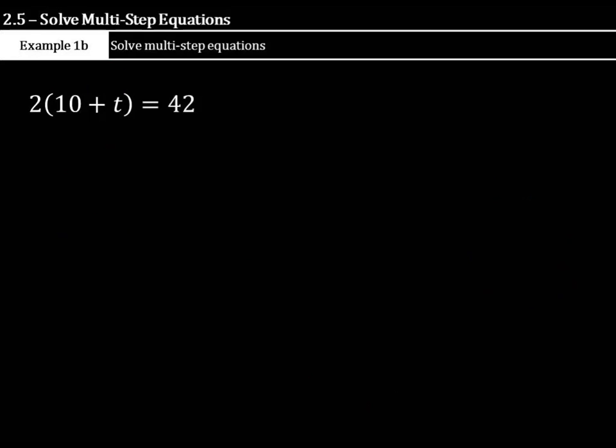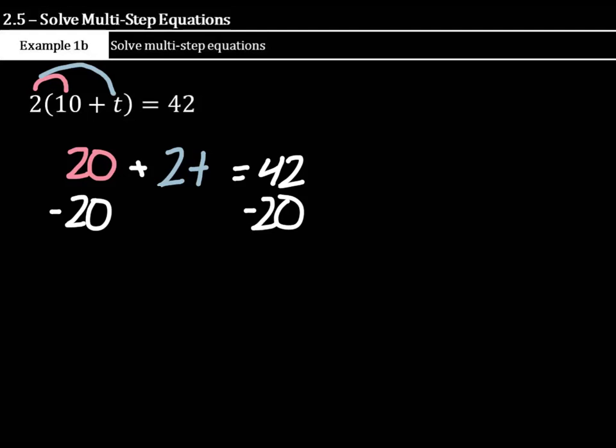Here we have 2 times 10 plus t equals 42. Well, again, we can distribute the 2 times 10 and the 2 times t. So 2 times 10 is 20 plus 2 times t is 2t equals 42. You have your variable with the 2 there. So let's focus on this 20 first. And what's the opposite of a positive 20 but a negative 20? So subtract 20 from both sides of the equation.